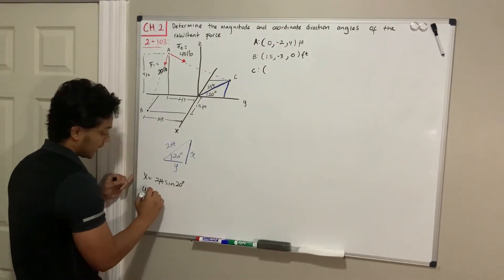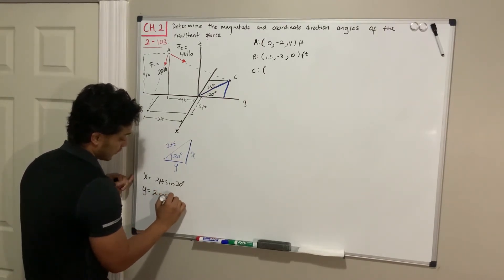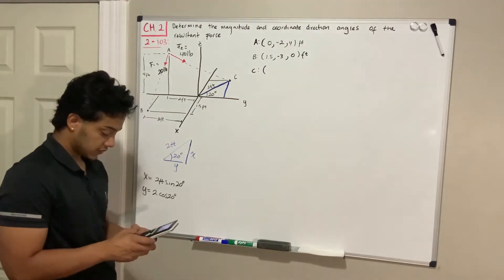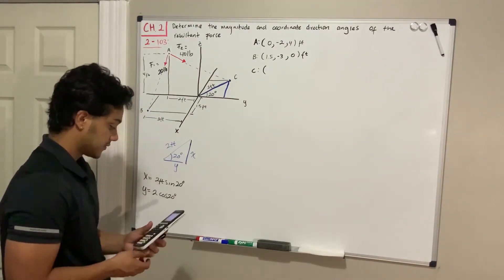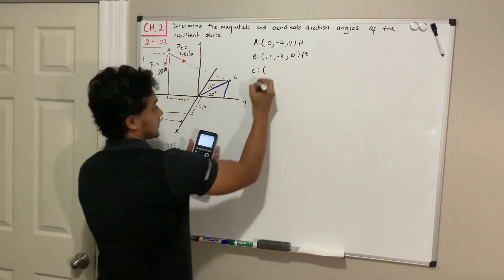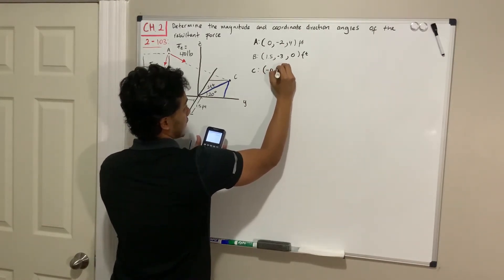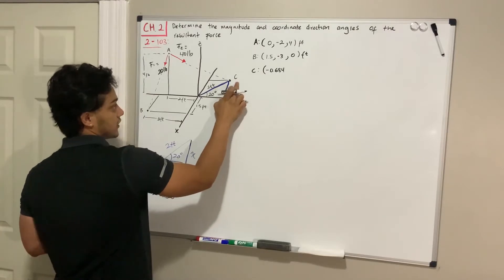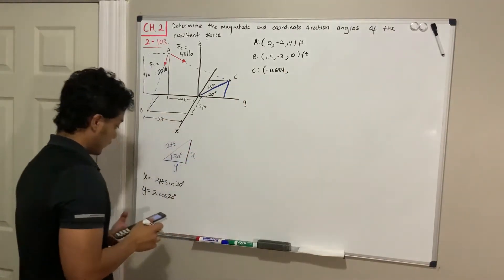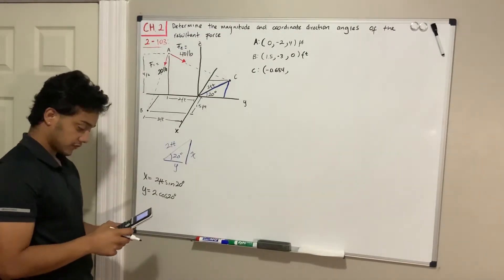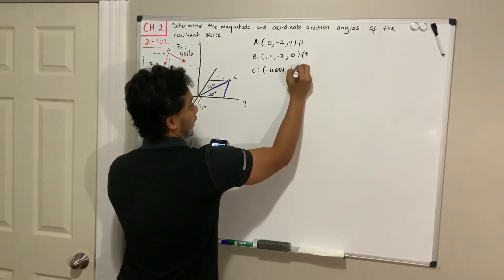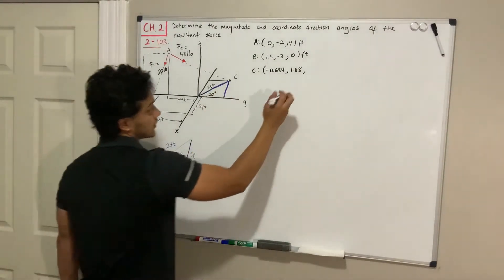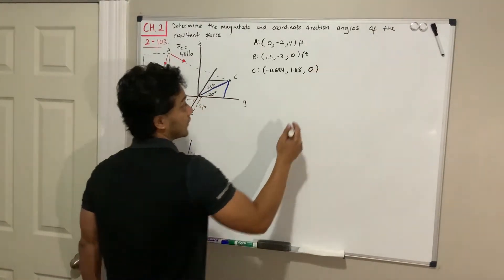The y-component is 2 feet multiplied by the cosine of 20 degrees. Using our calculator, 2 × sin(20°) gives us negative 0.684 — it's negative because the positive x goes the other way. For y, 2 × cos(20°) gives us 1.88, and this is positive because it goes to the right. The z-direction is 0 since this point lies in the xy-plane. So C is at (-0.684, 1.88, 0) feet.